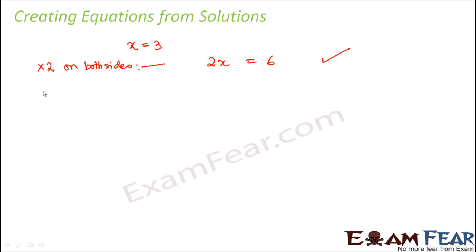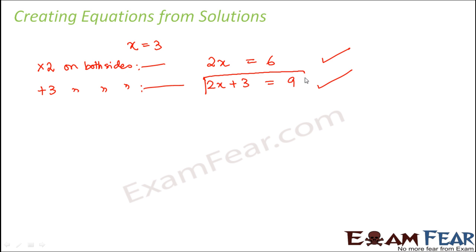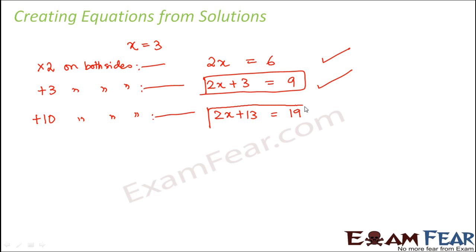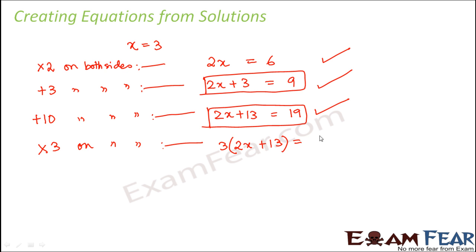Now if we add 3 on both sides, the left hand side becomes 2x plus 3 and the right hand side becomes 9, so 2x plus 3 equals 9 — this is again an equation. Now if we add 10 on both sides, it becomes 2x plus 13 equals 19 — also an equation. Now if we multiply both sides by 3, we get 3 into (2x plus 13) equals 57, which is also an equation. All of these satisfy the definition of an equation.